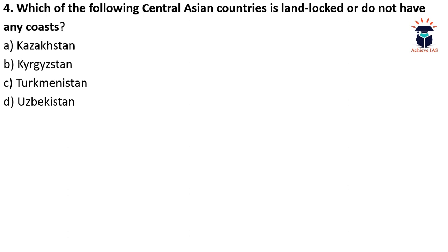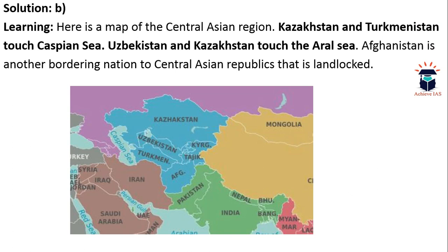Next question: which of the following Central Asian countries are landlocked and do not have any coast? Options: A — Kazakhstan, Kyrgyzstan, Turkmenistan; B — Uzbekistan. You can attempt this only if you go through a political map — it is very important to have an atlas during your preparation. The answer is B — Kyrgyzstan is landlocked. Kazakhstan and Turkmenistan touch the Caspian Sea; Uzbekistan and Kazakhstan touch the Aral Sea. Afghanistan, another bordering nation to the Central Asian republics, is also landlocked.